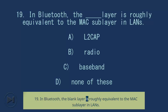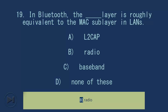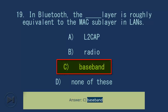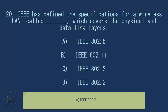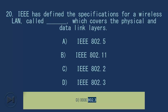Question 19: In Bluetooth, the blank layer is roughly equivalent to the MAC sublayer in LANs. A. L2CAP, B. Radio, C. Baseband, D. None of these. Answer: C. Baseband. Question 20: IEEE has defined the specifications for a wireless LAN called blank, which covers the physical and data link layers. A. IEEE 802.5, B. IEEE 802.11, C. IEEE 802.2, D. IEEE 802.3. Answer: B. IEEE 802.11.